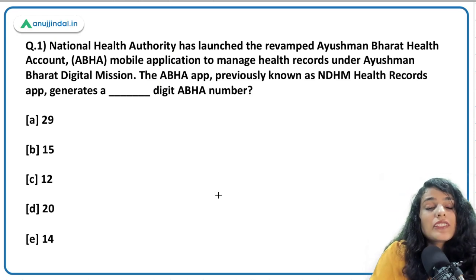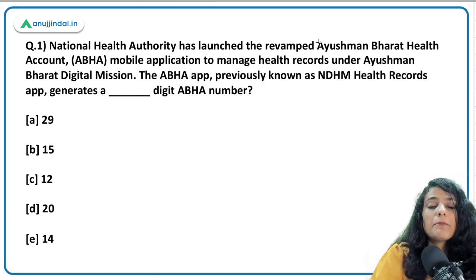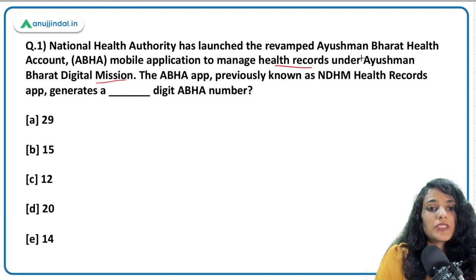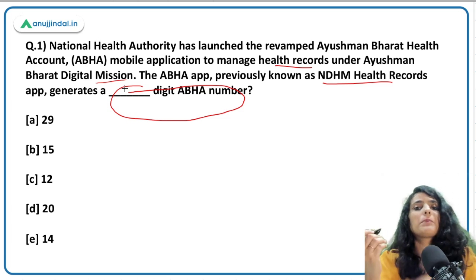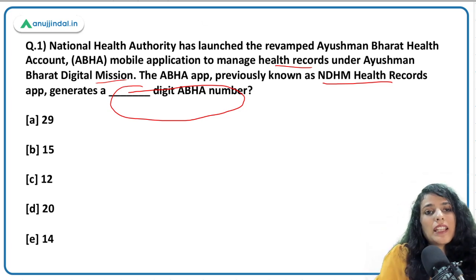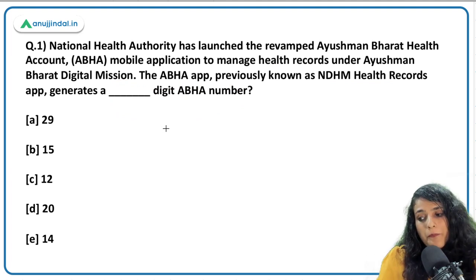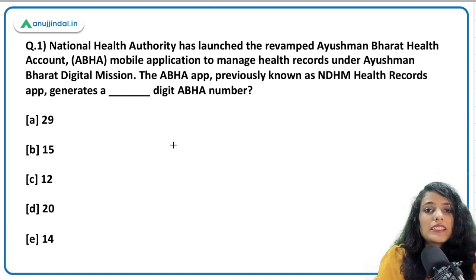Moving on to the first question: the National Health Authority has revamped its ABHA mobile app — earlier known as the NDHM app — to manage all health records under Ayushman Bharat Digital Mission. The app generates a 14-digit ABHA number, which gives people a single-point access to all their medical and health records for insurance and any other medical or documentation purposes.